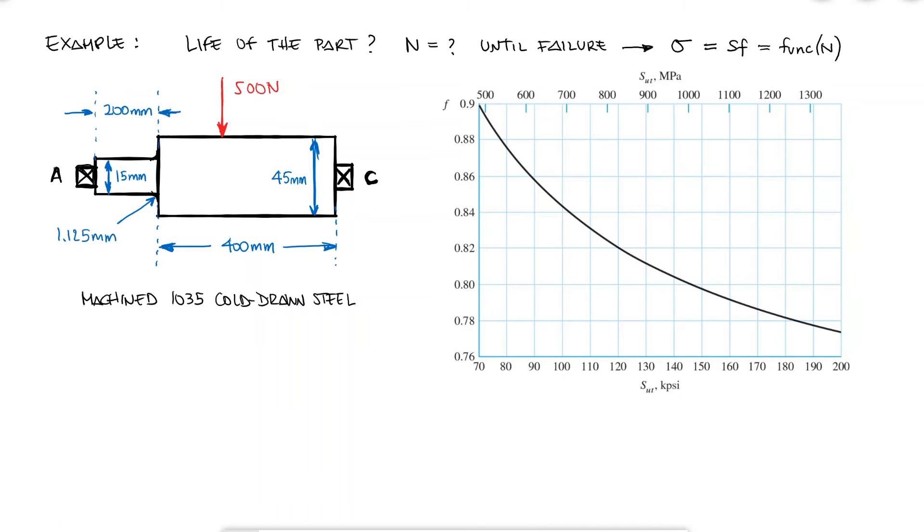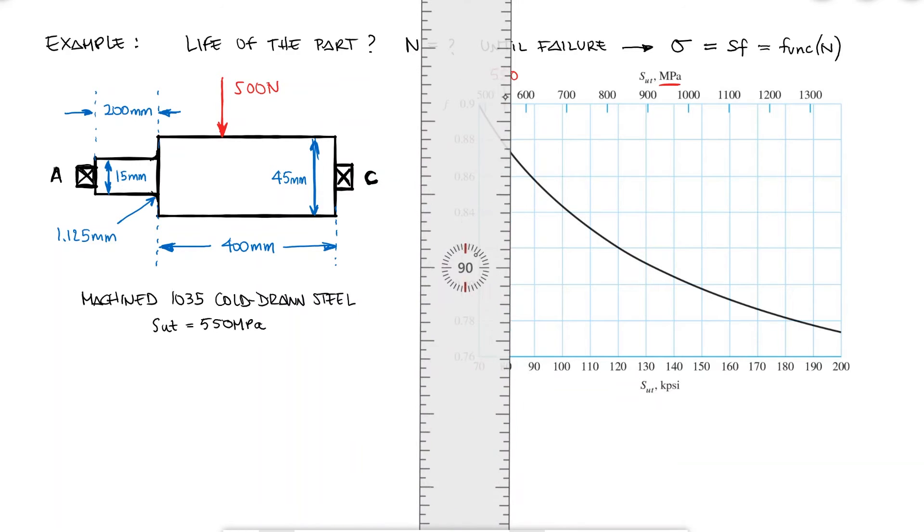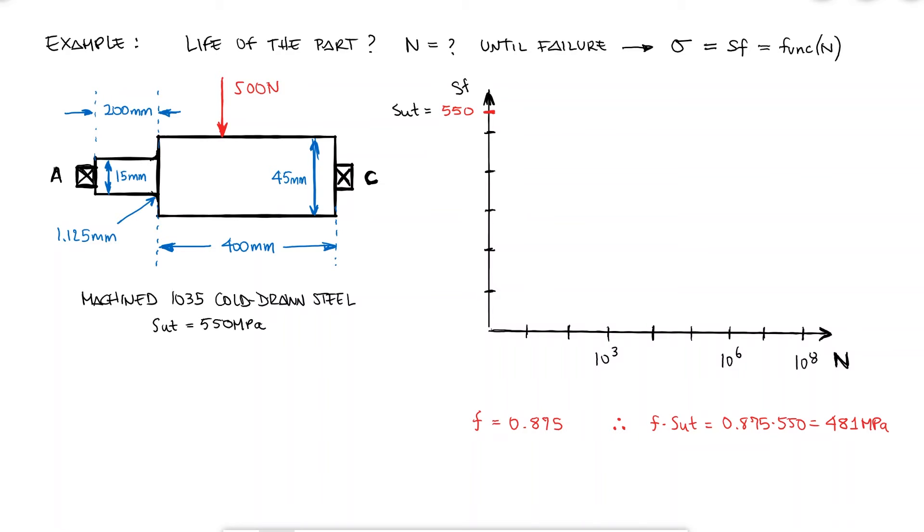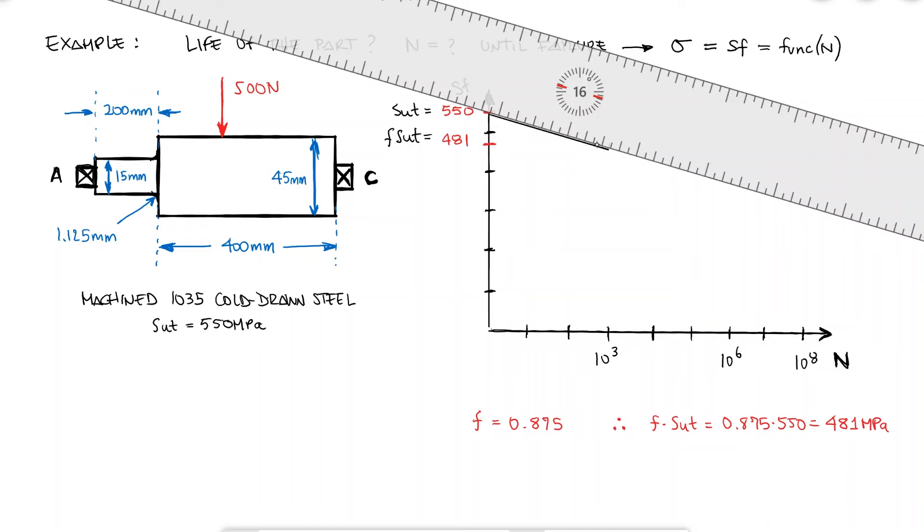After looking up the ultimate strength for the 1035 steel, I find that the tensile strength is 550 MPa. And for 550 MPa, the F coefficient that I find is 0.875, roughly in the middle between 0.87 and 0.88. Having F, and therefore the product between F and SUT, I can draw the line for the low cycle region.